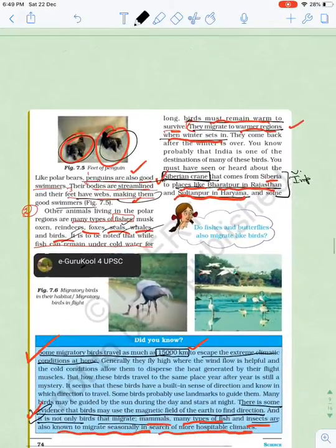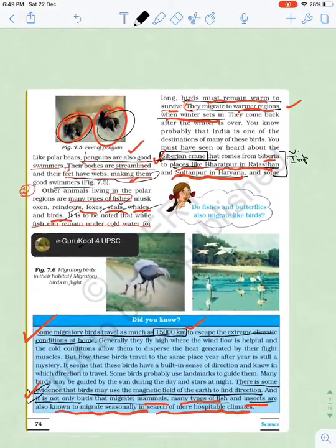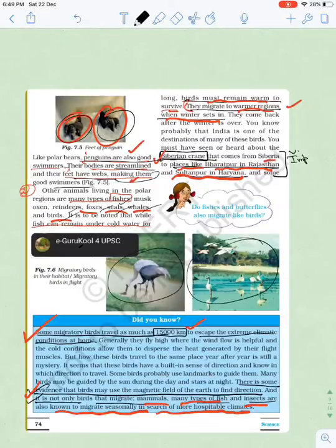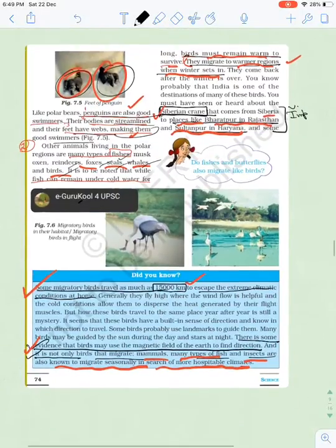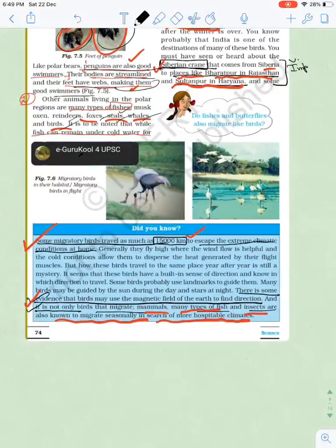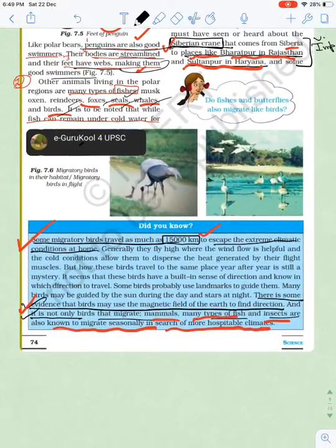Other animals of polar regions include fishes, musk oxen, reindeer, foxes, seals, whales and birds. All these can survive, but how do birds survive? Birds don't have the thick layer that penguins and polar bears have, so they migrate. When it gets very cold for six months, they fly to other countries.